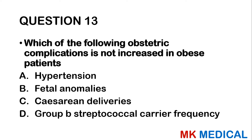Question 43: All are risk factors for vaginal candidiasis EXCEPT: A — HIV. B — hypertension. C — pregnancy. D — diabetes mellitus. E — antibiotic use. HIV causes immunosuppression predisposing to fungal infection. Pregnancy also suppresses the immune system. Diabetes and antibiotic use (clearing normal flora) also predispose. Hypertension has no established link to vaginal candidiasis. The answer is B.